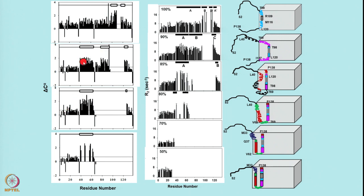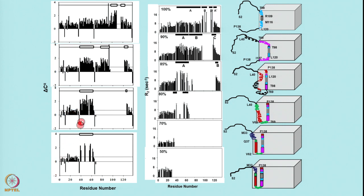As you decrease DMSO, helical propensity increases — this area also acquires helical propensity. The peaks corresponding to this helix have disappeared, meaning they have gone into the assembly and associated state. Further reducing DMSO causes more peaks to vanish into the associated state. Going further down still, even more peaks have disappeared — all gone into the associated state — while this large helix is still remaining, and the N-terminal segment remains free.